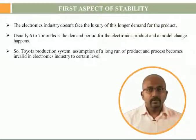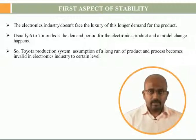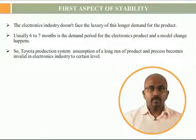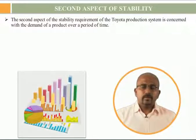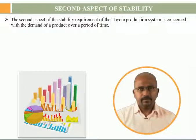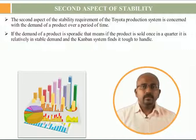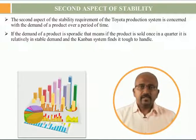There are other industries as well where the product may change much faster and significantly over a much shorter period of demand than that faced by the car industry. The second aspect of the stability requirement is concerned with the demand of a product over a period of time. If the demand of a product is sporadic — meaning the product is sold once in a quarter — it represents relatively unstable demand, and the Kanban system finds it tough to handle.